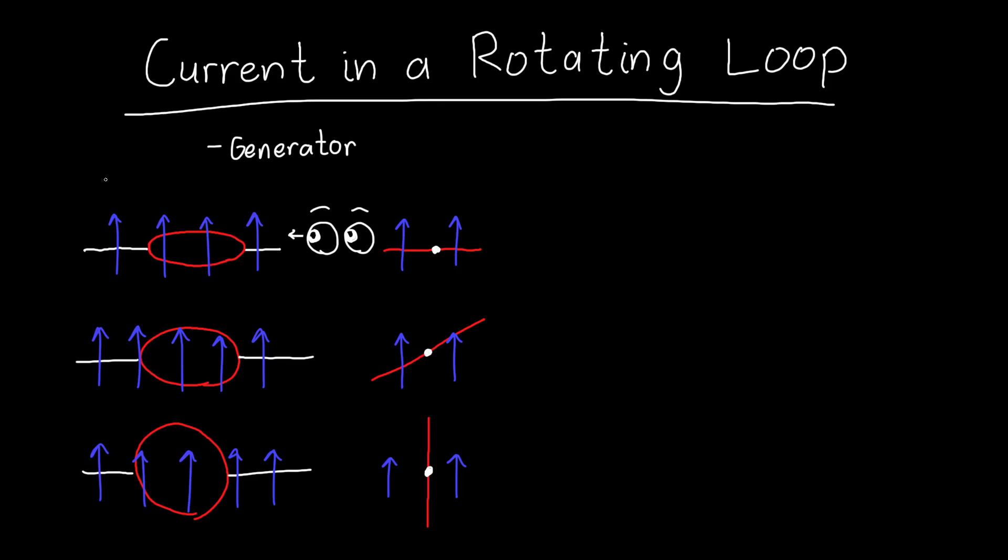And so the problem goes something like this. We've got an external magnetic field, which I've drawn here in blue. And we've got a metal loop, which is this little red circle that I've drawn here. And that red loop rotates about, let's call this the x-axis.